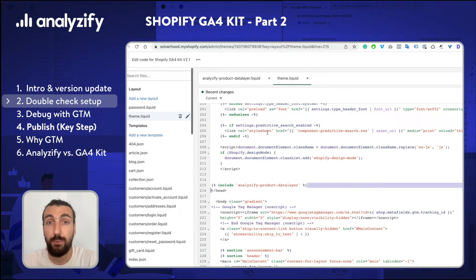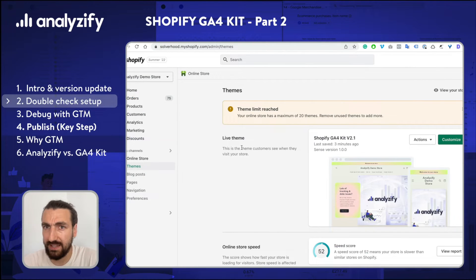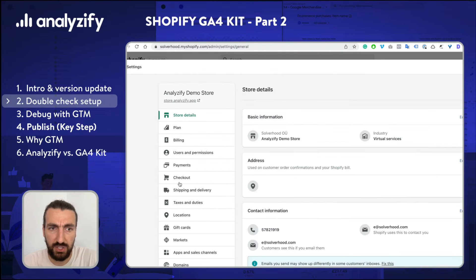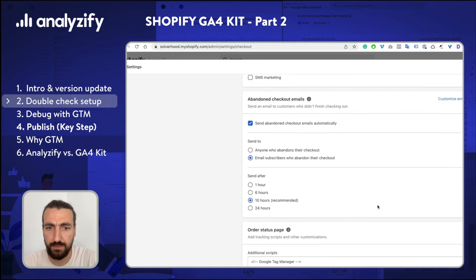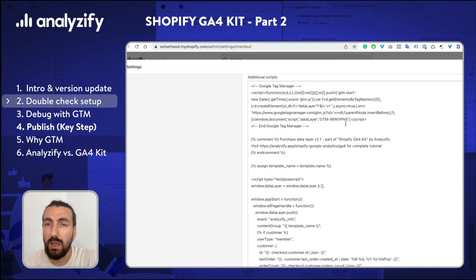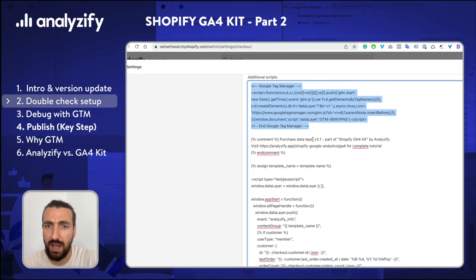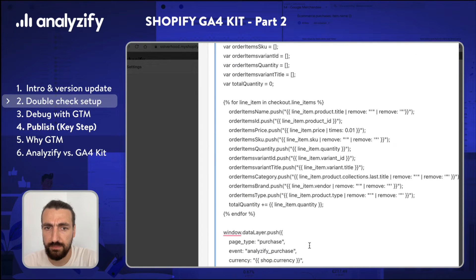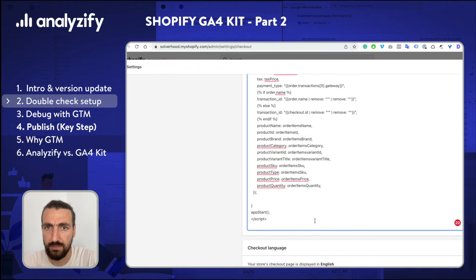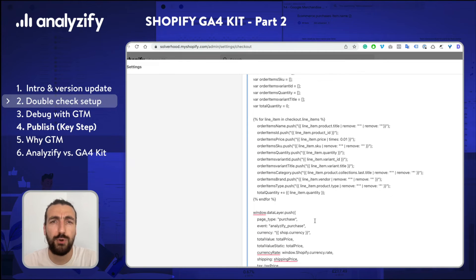Now let's check the purchase data layer. You might already remember that the purchase data layer is added through Settings, Checkout and Additional Scripts. We need to do the exact same check here — the GTM snippets, the version, and the rest of the code. If you are following this tutorial from part 1 and just jumped to part 2, these things will already be correctly in place.